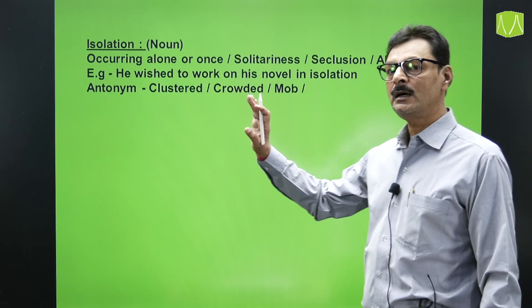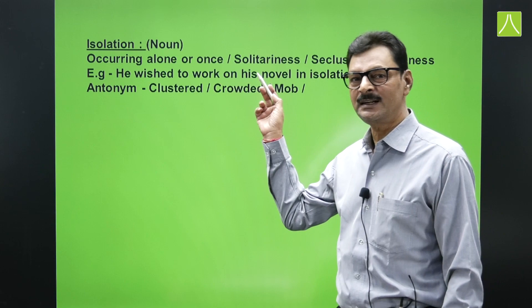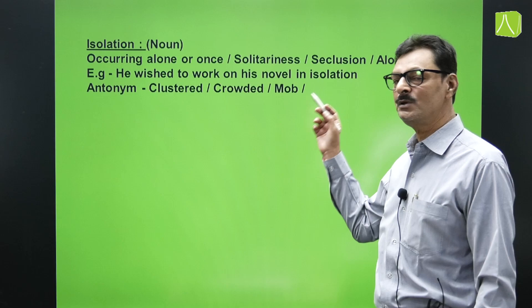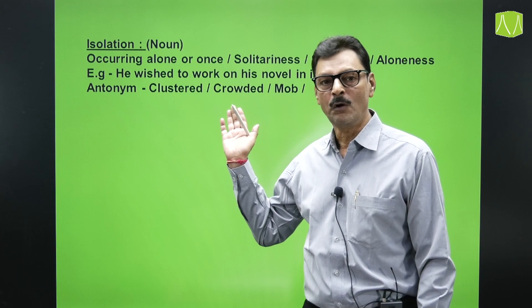The next word is 'isolation,' meaning aloof or aloneness. Occurring alone; synonyms include solitariness, seclusion, and aloneness. Example: 'He wished to work on his novel in isolation' — he wanted to work peacefully alone. The antonyms are clustered, crowded, and mob.